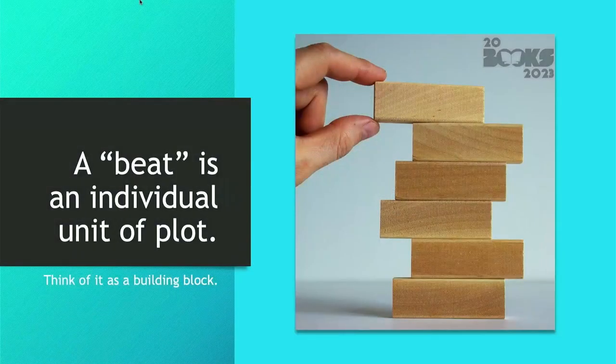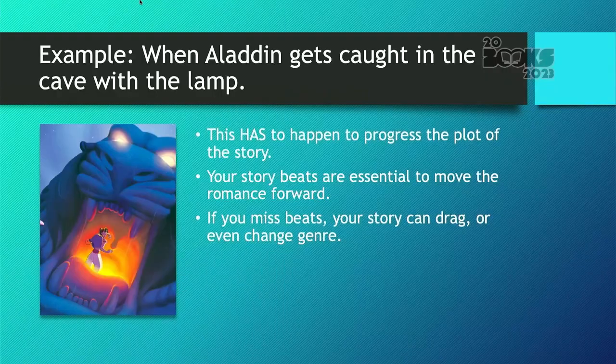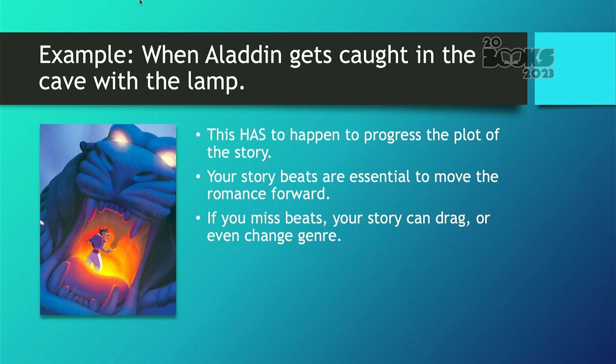A beat is an individual unit of plot — think of it as a building block. For example, when Aladdin gets caught in the cave with the lamp, this is a story beat. This has to happen in order to progress the plot of the story. So your story beats are something that have to happen in order for your story to progress.